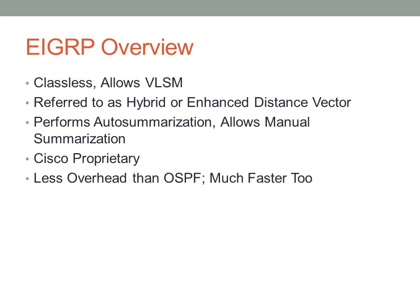There is much less overhead with EIGRP than OSPF, and because of the triggered update, EIGRP achieves very fast convergence, typically sub-second.